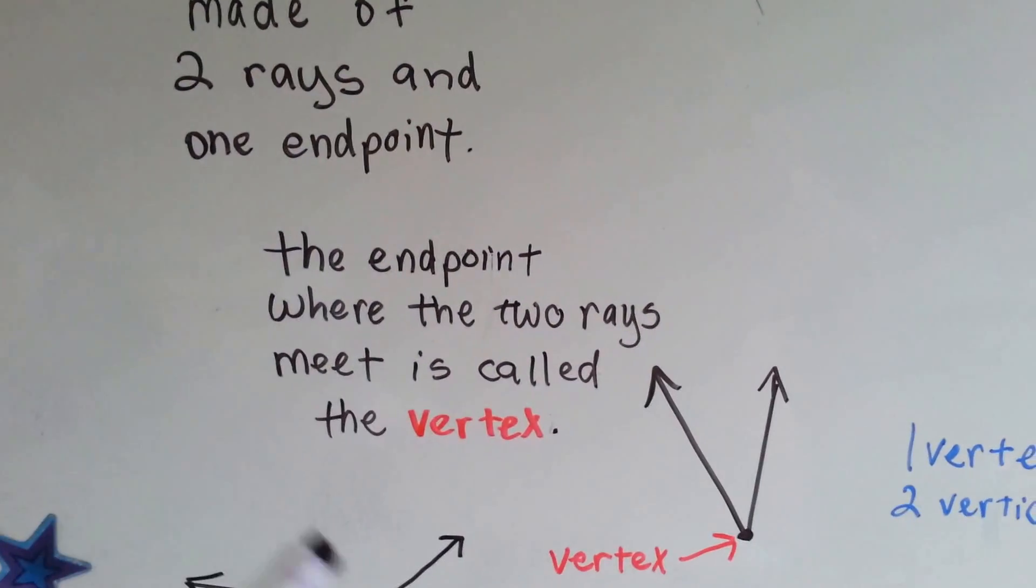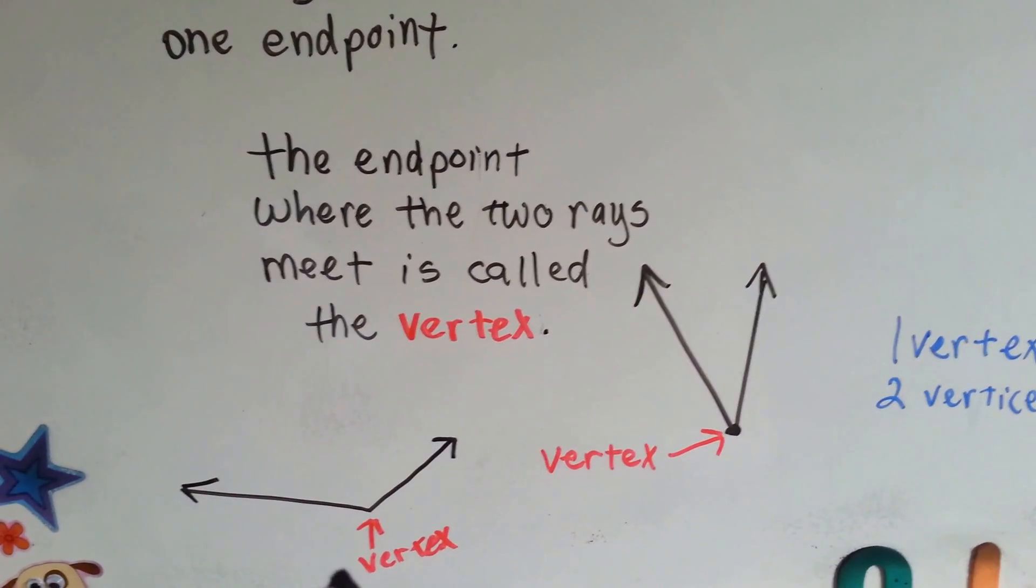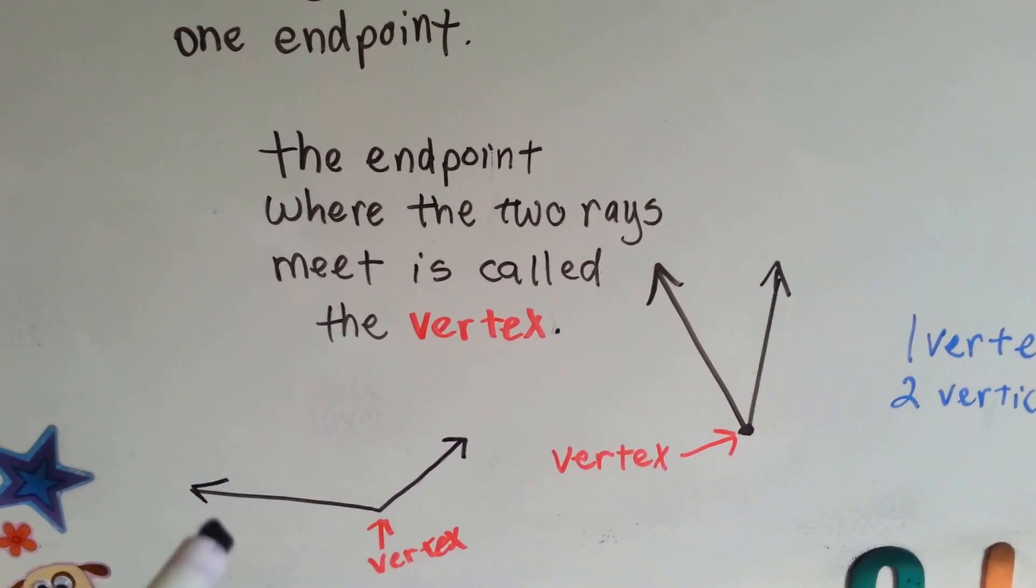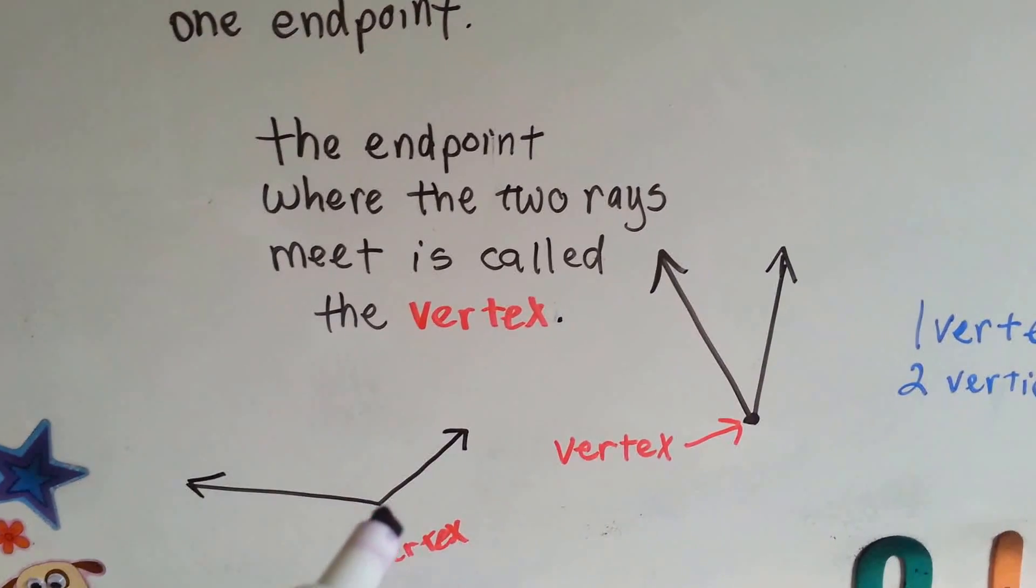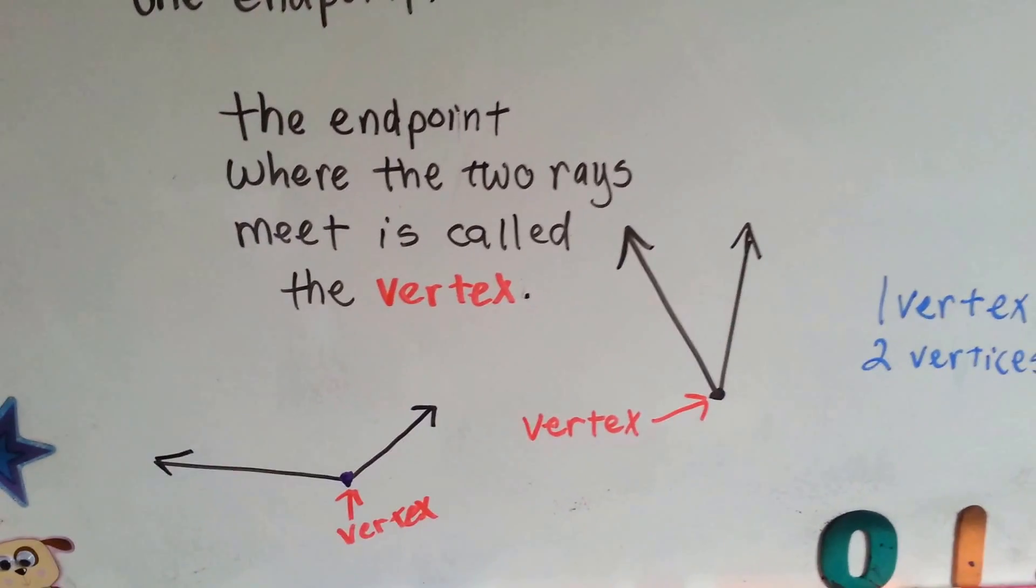Now, the endpoint where the two rays meet is called the vertex. See that vertex with the x. That little tiny point right here where they meet.